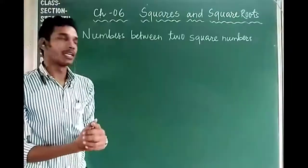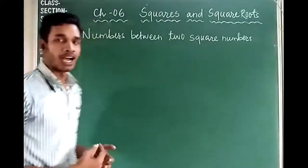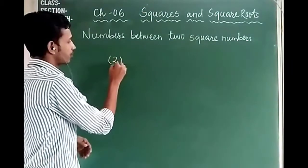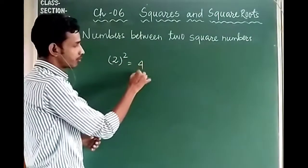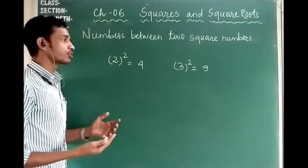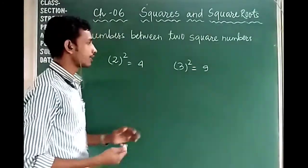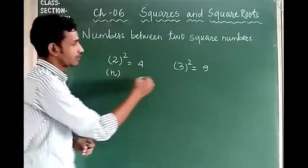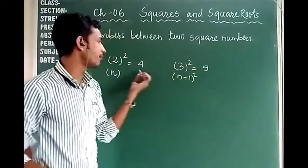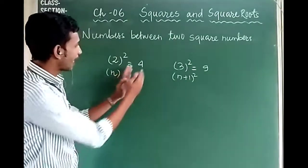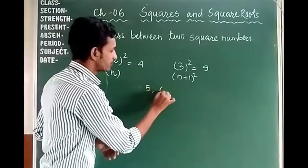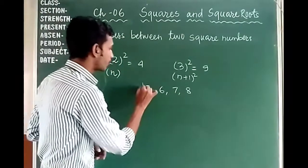Next we will see how many non-square numbers lie between two consecutive square numbers. Suppose we take 2 squared and 3 squared. So 2 squared is 4 and 3 squared is 9. Between 4 and 9, the non-square numbers are 5, 6, 7, and 8 — that is 4 non-square numbers. The formula to find this is 2 into n, where n is the smaller number being squared.